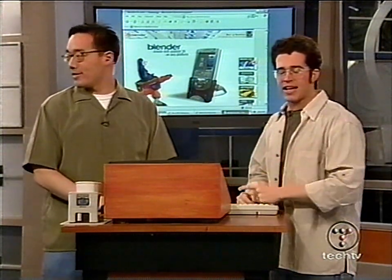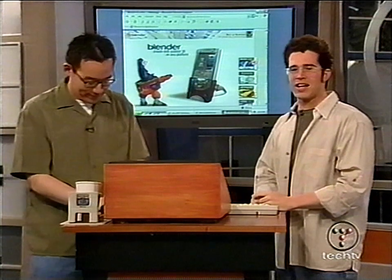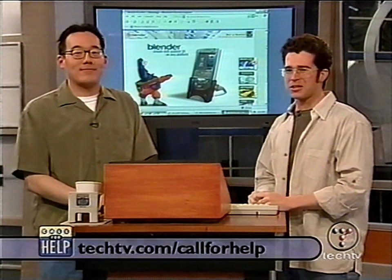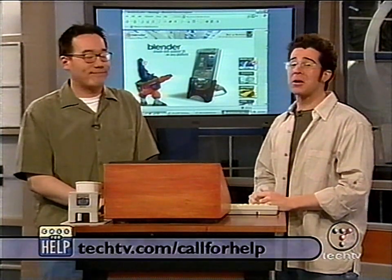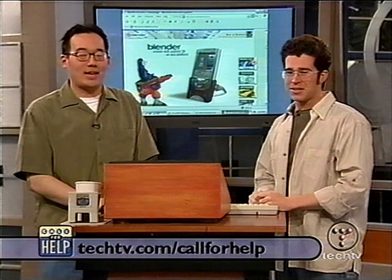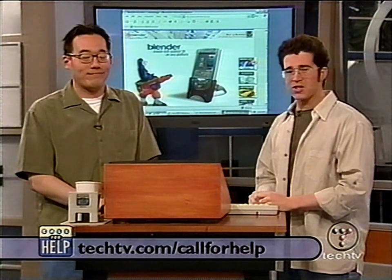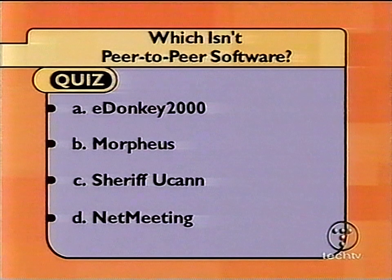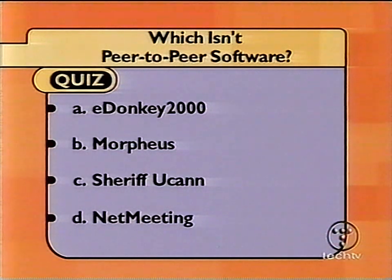One more chance to take the daily quiz at TechTV.com/callforhelp. Answer correctly and you'll be in the running for a Call for Help t-shirt. Here's today's quiz: which is NOT peer-to-peer software? A) eDonkey 2000, B) Morpheus, C) Sheriff UCAN, or D) NetMeeting?